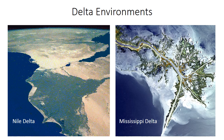Next up in our discussion of coastal clastic environments is the delta environment. Deltas are the interface between the river and coastal settings, and they're characterized typically by a mixture of fluvial, wave, and tidal processes.